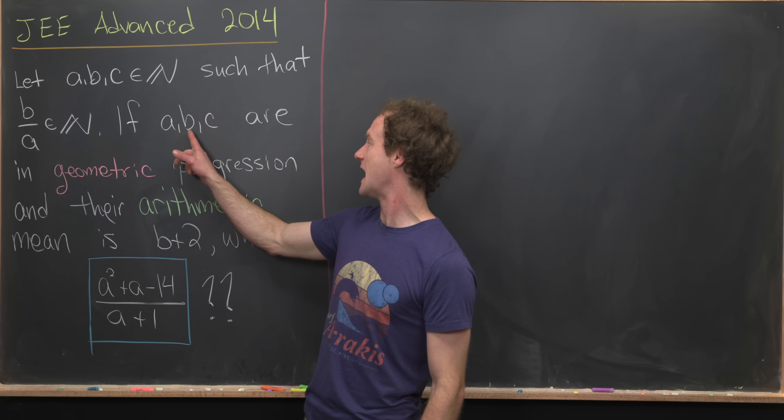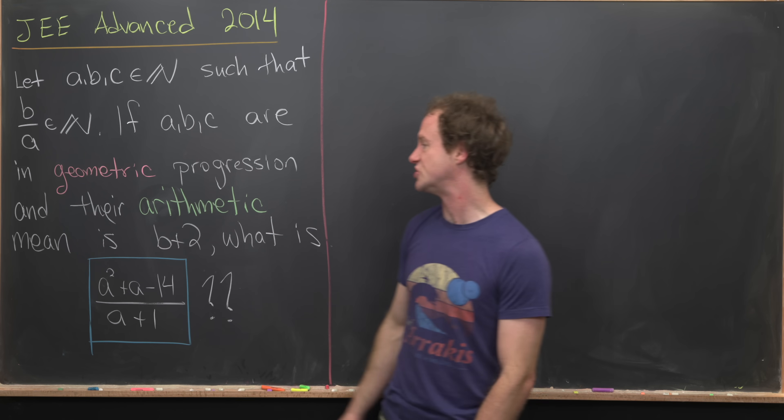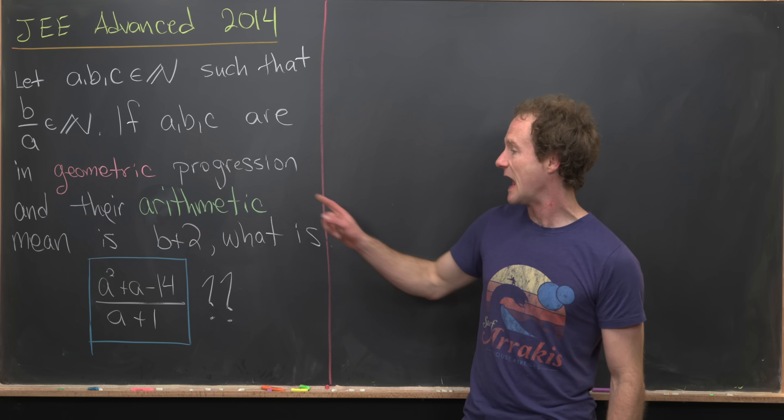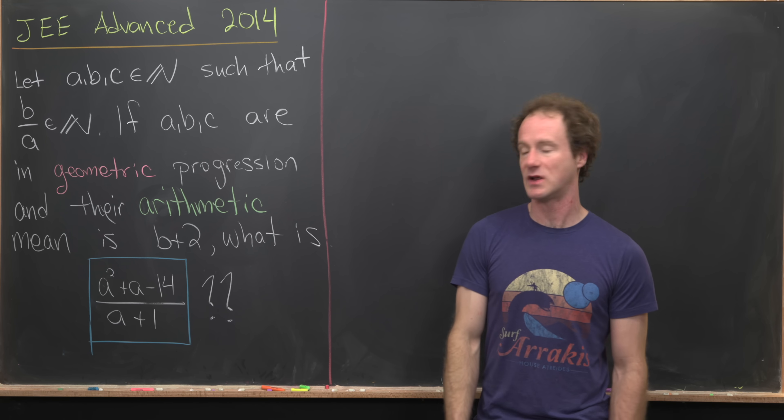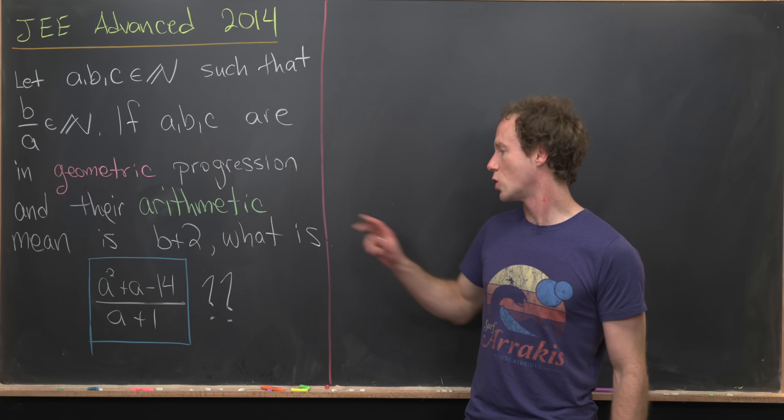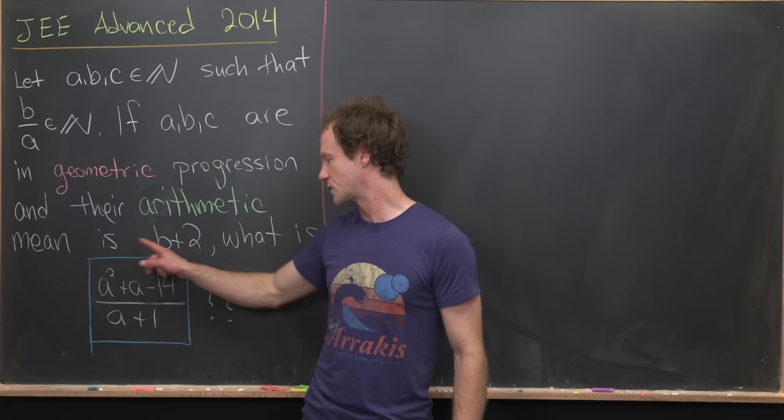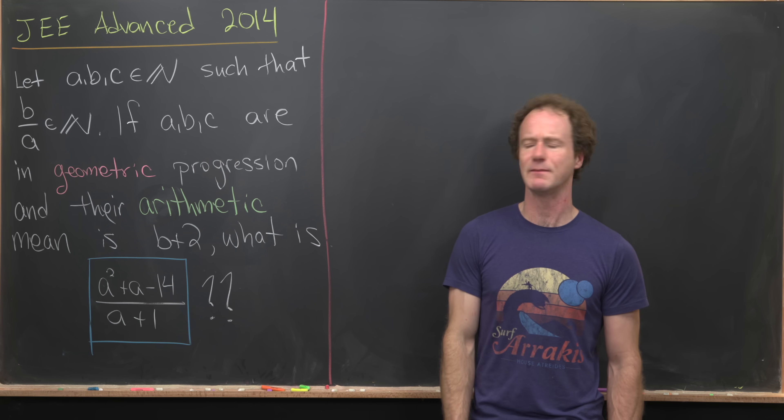We want to suppose that A, B, and C are in geometric progression and their arithmetic mean is B plus 2. And then our goal is to find the value of this quantity, which is A squared plus A minus 14 over A plus 1.